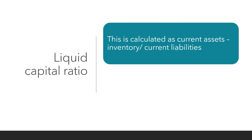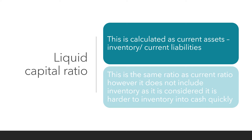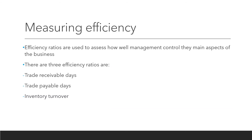Liquid capital ratio. This is calculated as current assets minus inventory, divided by current liabilities. This is the same ratio as the current ratio; however, it does not include inventory as it is considered harder to turn inventory into cash quickly.